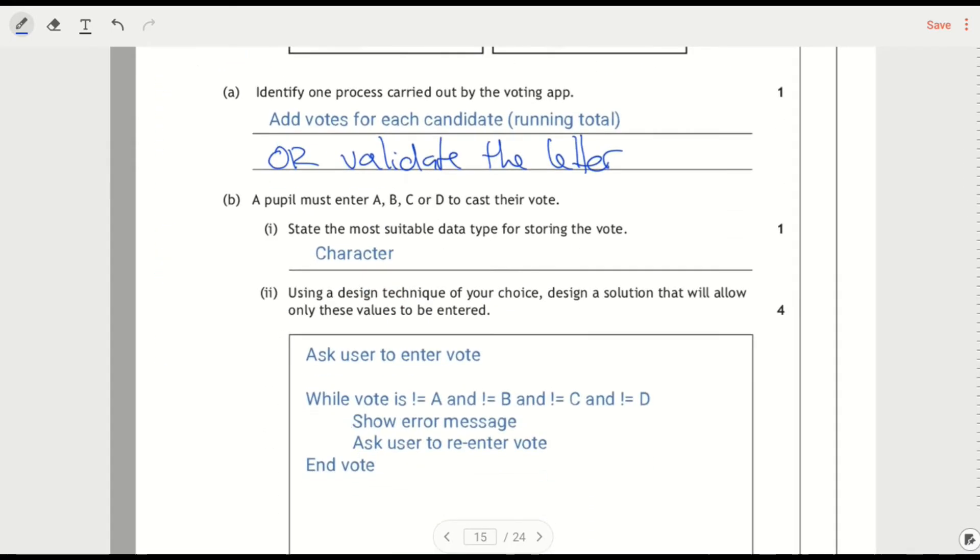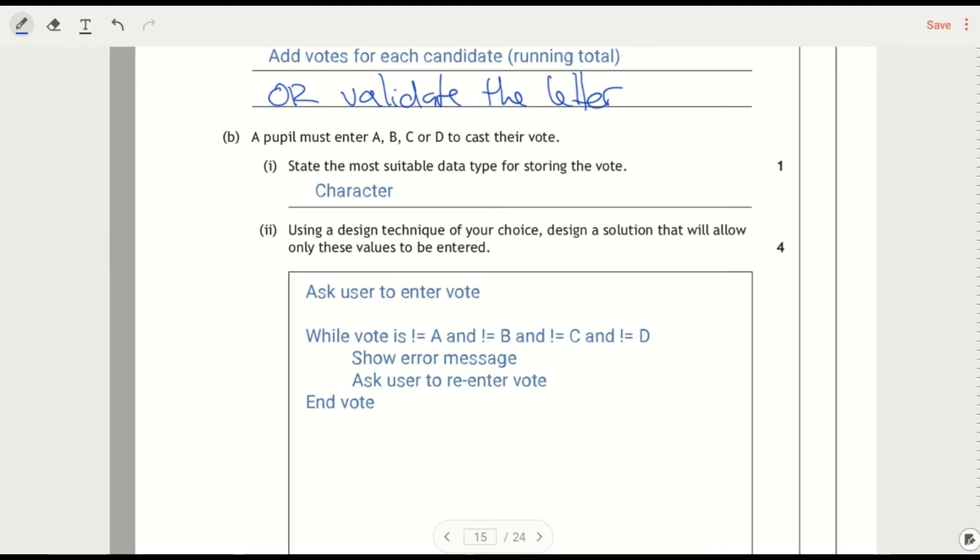People must enter A, B, C or D to cast their votes. The most suitable data type is a character. It says most. String works, but it's not the most suitable. So it's not going to get the mark. It's character because it's only one.